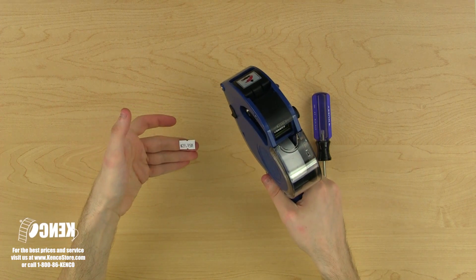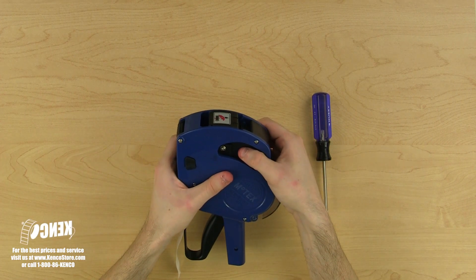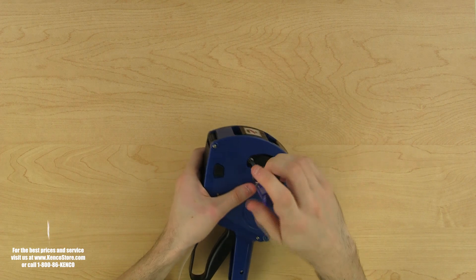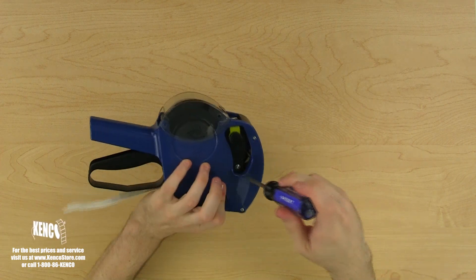After the print head has been adjusted, we can test it to make sure it's lined up properly. Now that it's printing perfectly, we can tighten the adjustment screws back up and we're ready to begin labeling.